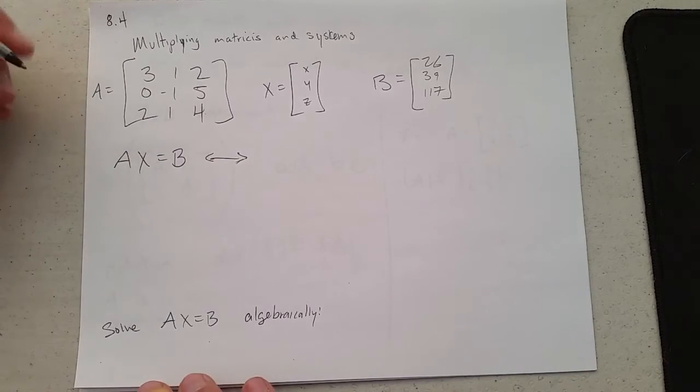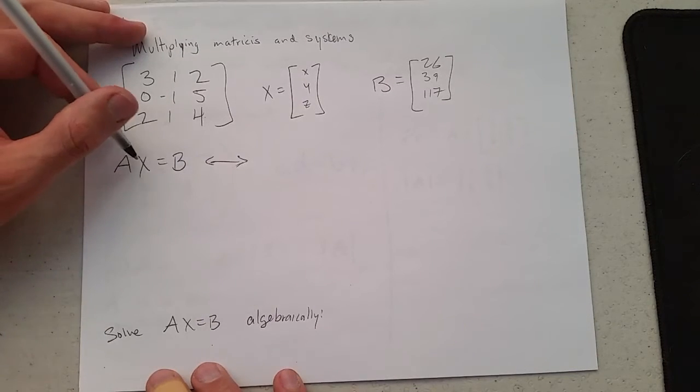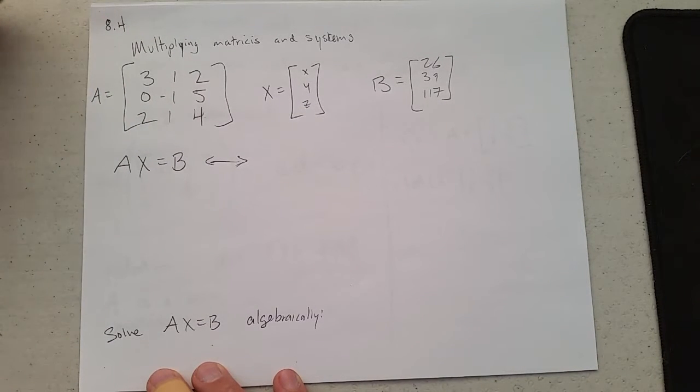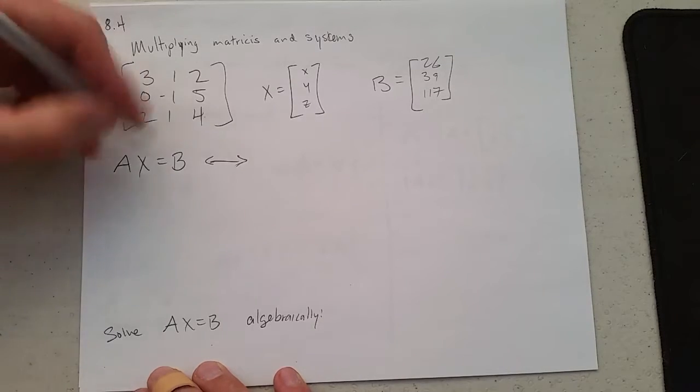So how can we use matrix algebra here to represent a system? I'm going to multiply A and X.